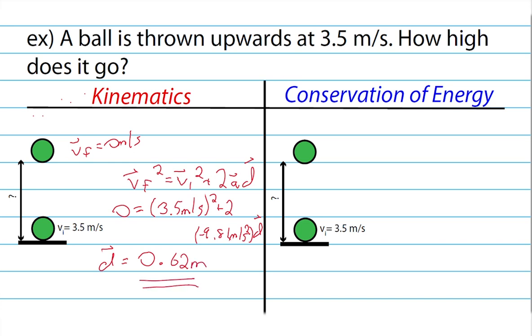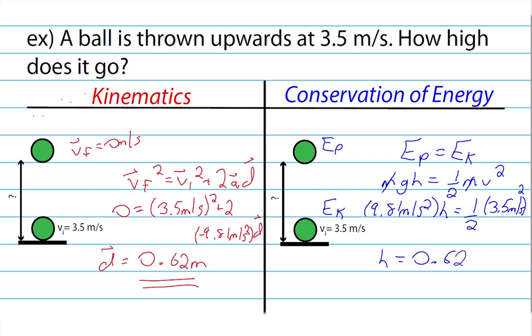If we were to do this with the conservation of energy, we would again say that we have gravitational potential energy at the highest point, and kinetic energy at the lowest point. We'd make those two energies equal to each other through the conservation of energy, put in mgh for the gravitational potential energy, and one-half mv squared for the kinetic energy. Cancel out the masses and substitute in. You'll notice as you do this, you get a formula that looks a lot like the last one that we were looking at. When I go through and solve, I will also get 0.62 meters.